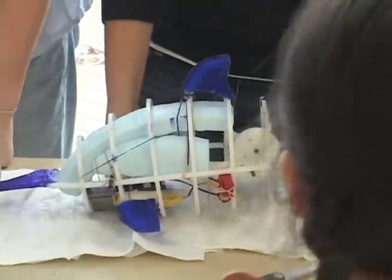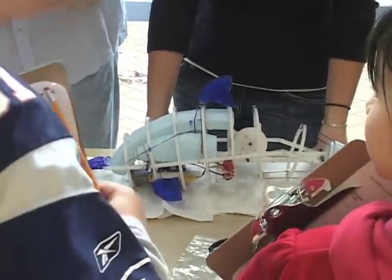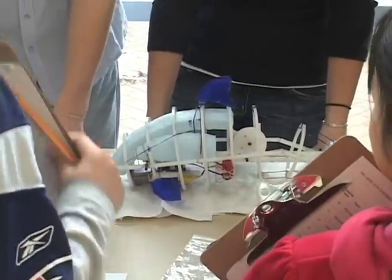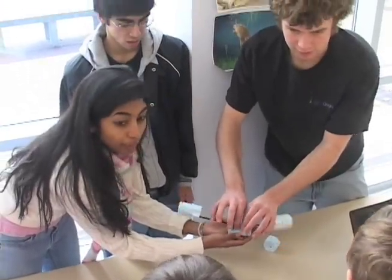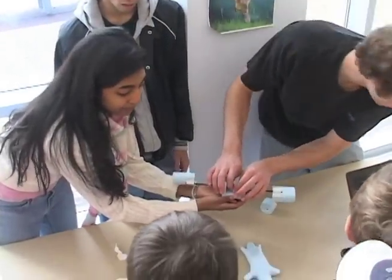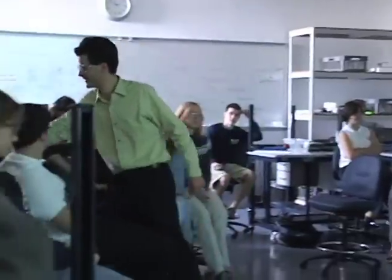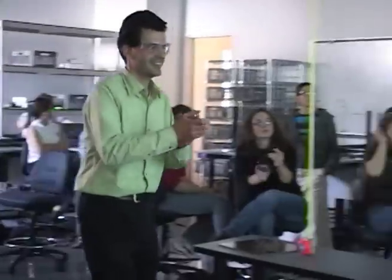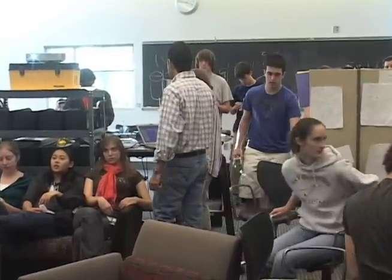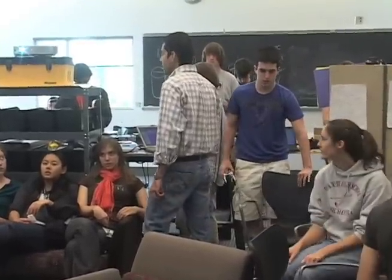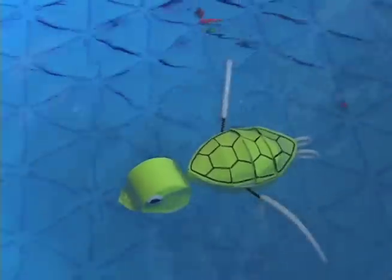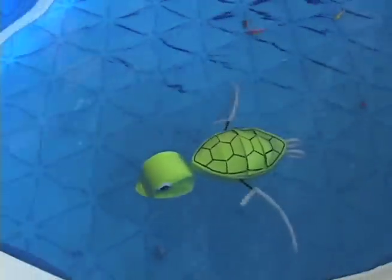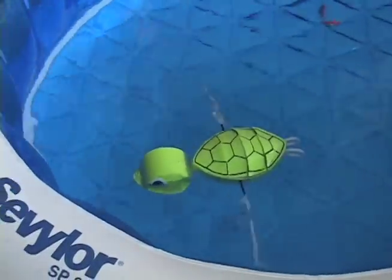The first project starts out with us giving the students a fairly loosely defined problem statement. There's a process that we try to get across — we call that the process content — but there's also the specific context in which the process is applied. In this course, that happens to be by inspiration. We ask students to make connections with nature, to be inspired by nature, to learn about nature, and to appreciate nature.